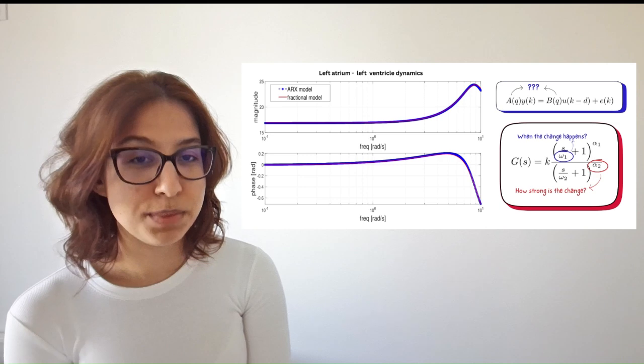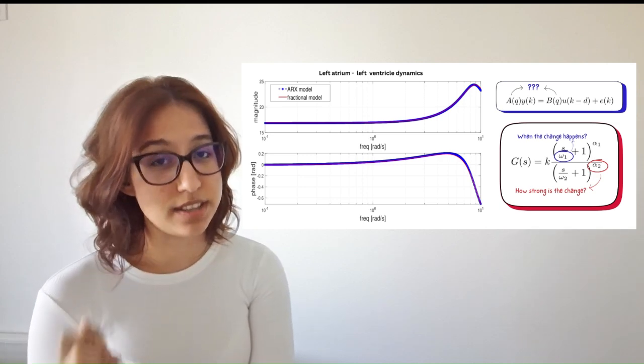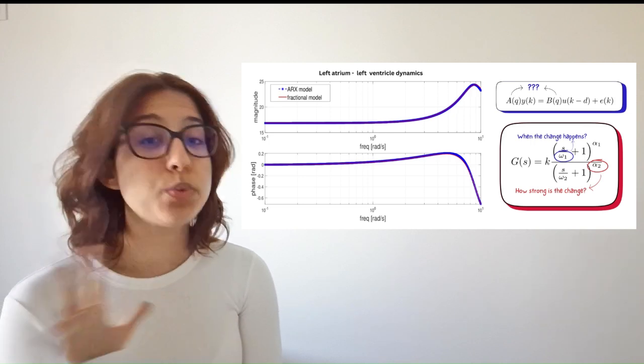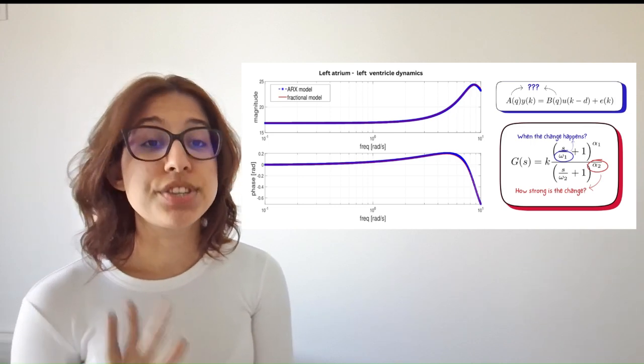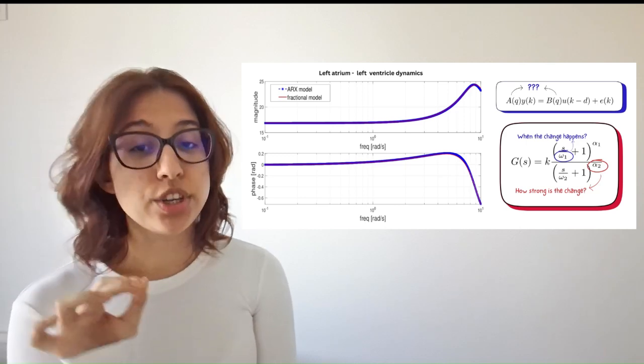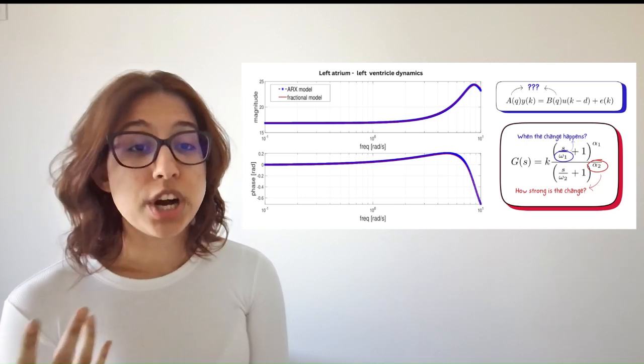That's where my fractional model comes in. It keeps the accuracy of the standard approach but solves the complexity problem. Instead of 20 random numbers, it uses just five clear parameters. It identifies the critical frequency that tells us when changes in the heart dynamics happen.